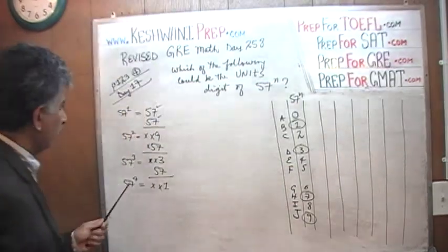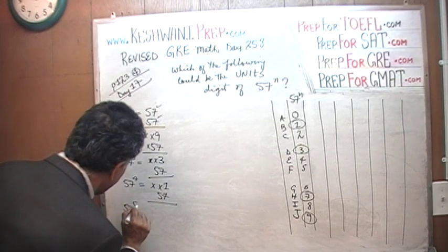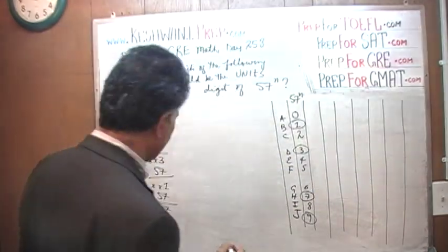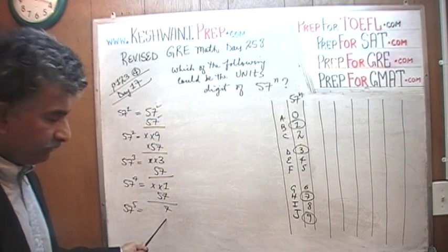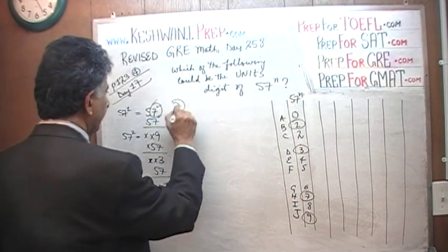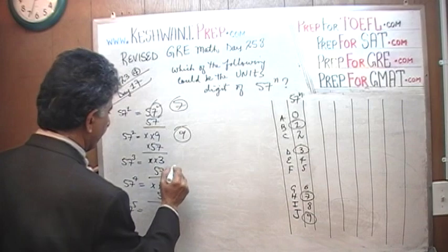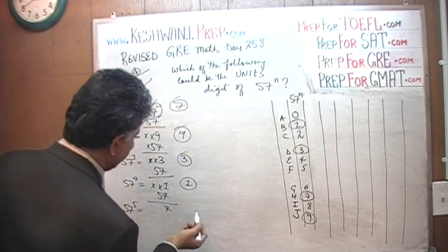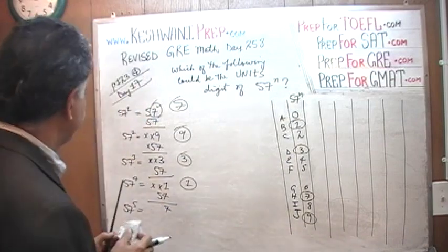As soon as we hit a 7 again, it's going to begin to repeat itself. Multiplying by 57 one more time gives us 57 raised to 5: 1 times 7 is 7. Once we hit a 7, the cycle repeats. So the answers are: 57 raised to any power ends in 1, 3, 7, or 9 — that's it, we're done.